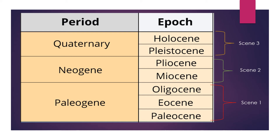Next, the trick for remembering epochs in correct order. In Paleogene period there are three epochs. In Neogene period there are two epochs: Miocene and Pliocene. In Quaternary period there are two epochs: Pleistocene and Holocene. Notice that all these epoch names end with '-cene.' For remembering these epochs, you have to imagine some scenes.